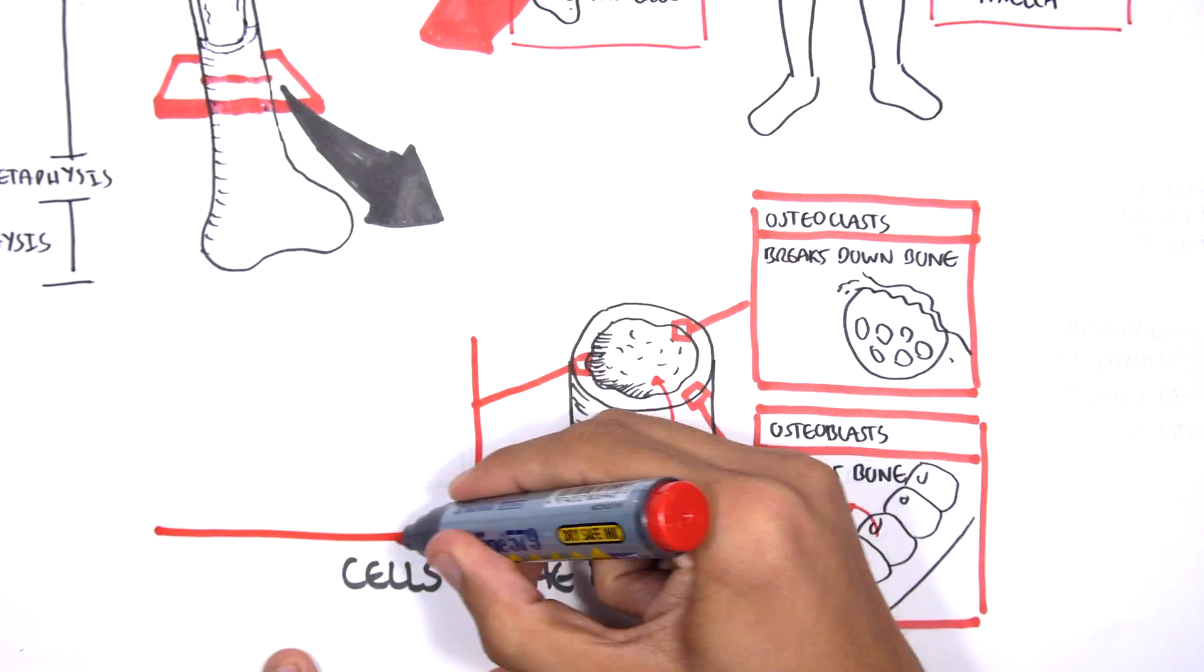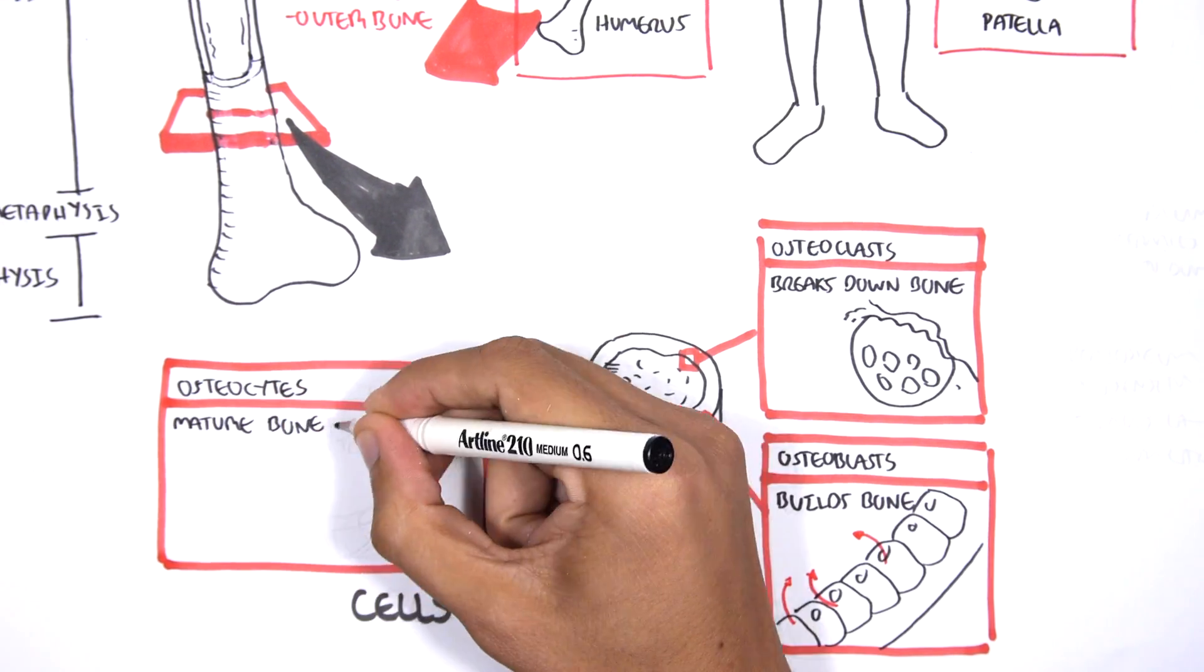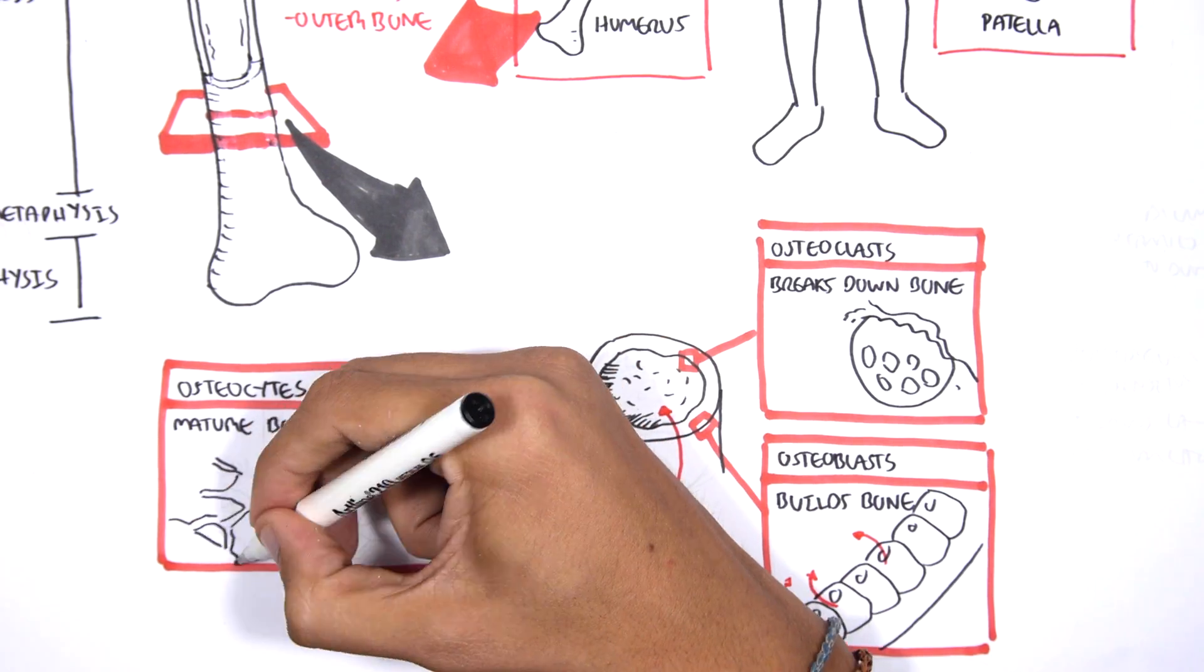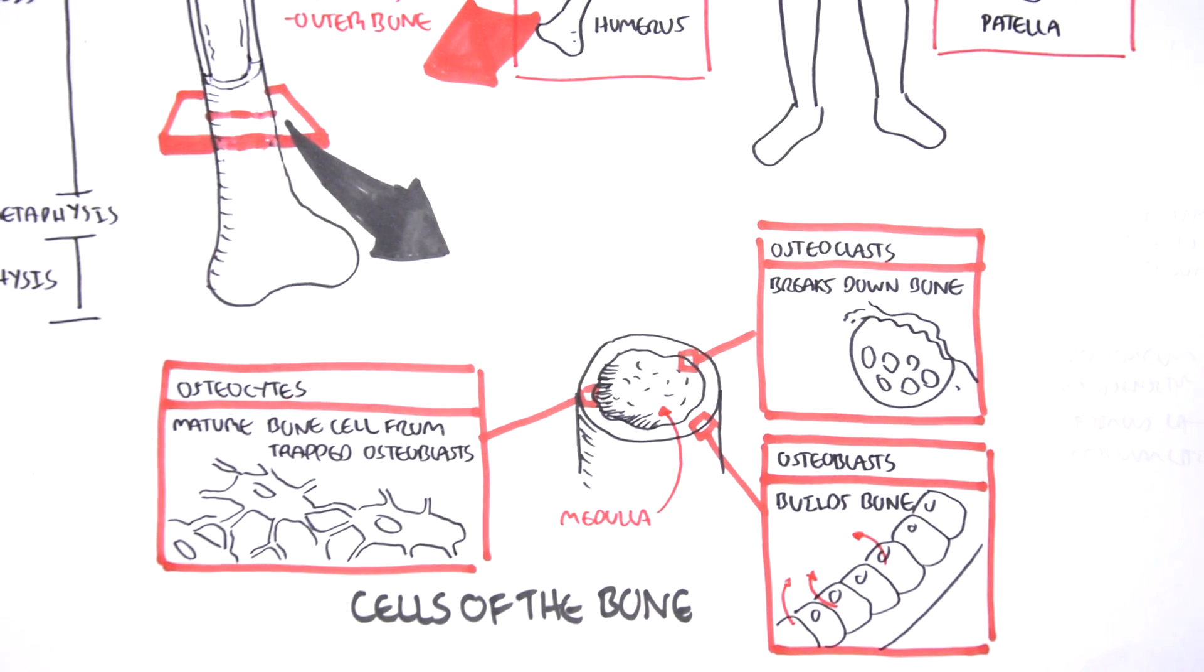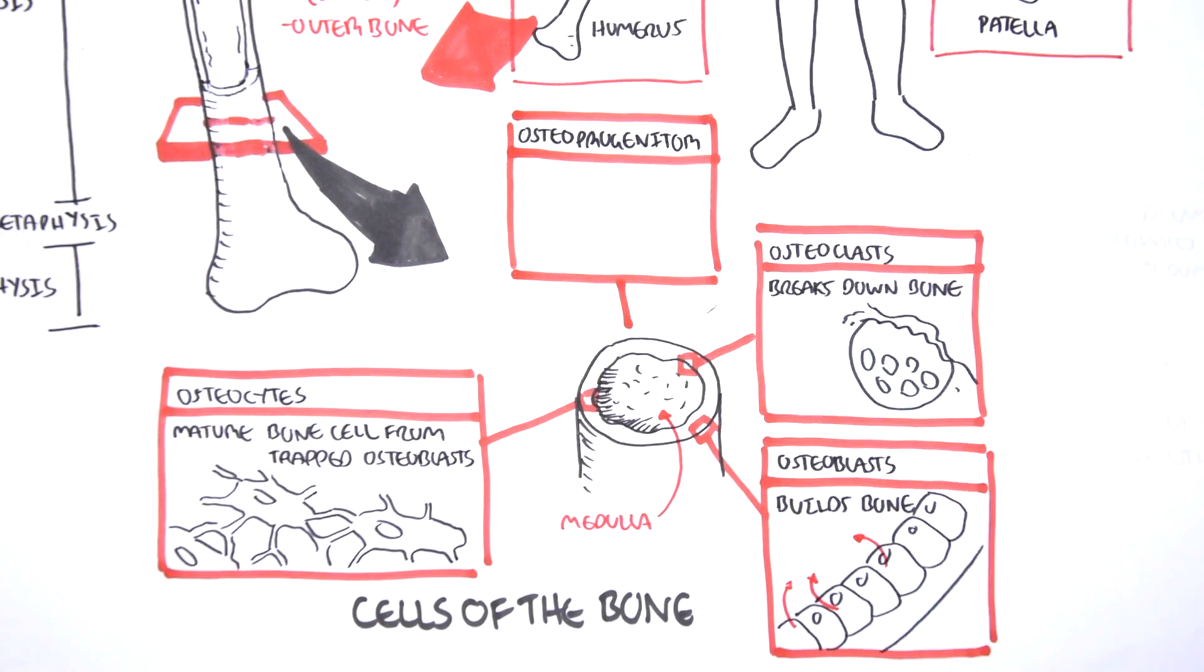There is also osteocytes, which are mature bone cells from trapped osteoblasts. They are osteoblasts, and they become trapped in their own matrix forming osteocytes. You also have osteoprogenitor cells, which are cells that essentially become osteoblasts.